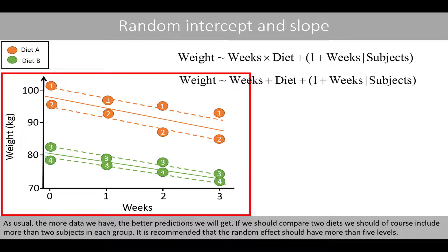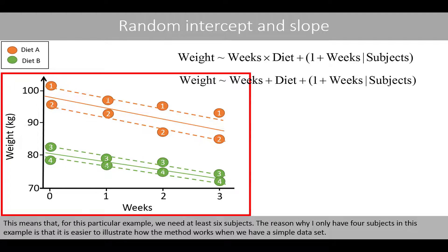If we should compare two diets, we should of course include more than two subjects in each group. It is recommended that a random effect should have more than five levels. This means that for this example, we need at least six subjects. The reason why I only have four subjects in this example is that it is easier to illustrate how the method works when we have a simple dataset.